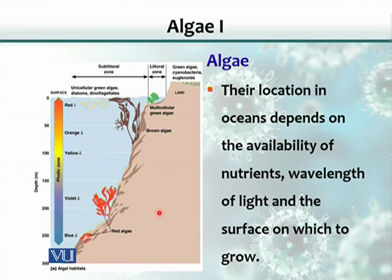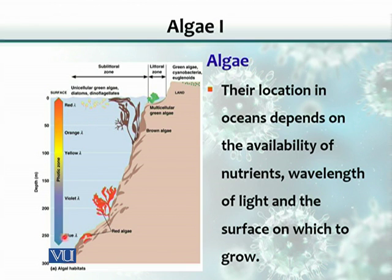Various algae are present in the ocean, and their location basically depends on the availability of nutrients as well as light. Light has a spectrum from red to blue, and that is the reason various species of algae are present at different levels in the ocean. Red light has a longer wavelength, so its penetration power is less than blue light. Therefore, blue light-absorbing algae are found deeper in the ocean than red light-absorbing algae. Here we can see green algae, brown algae, and red algae.